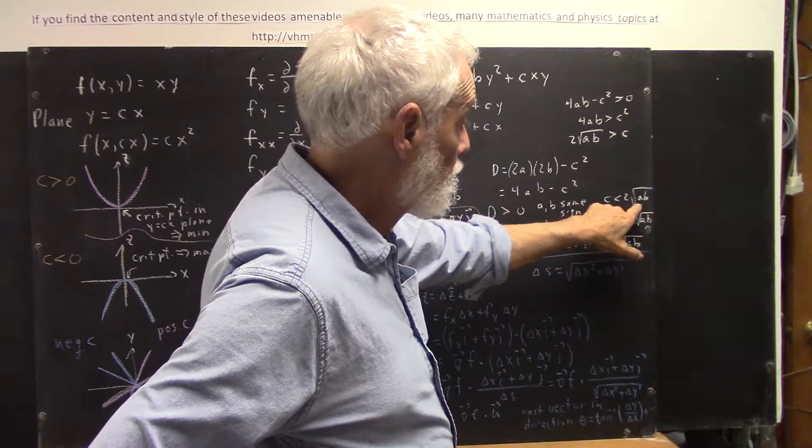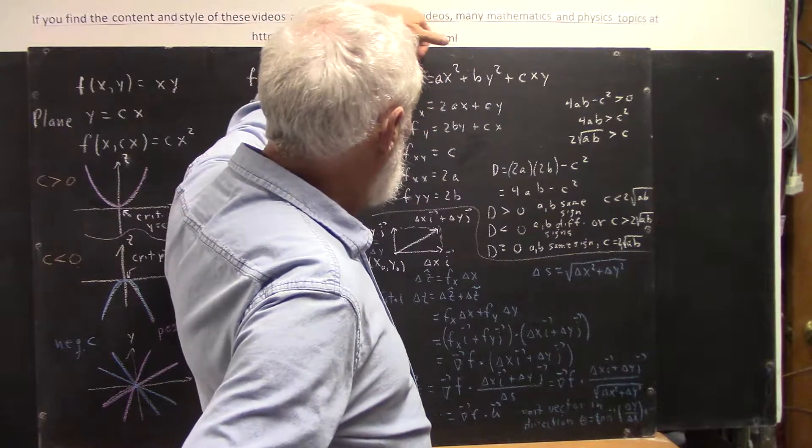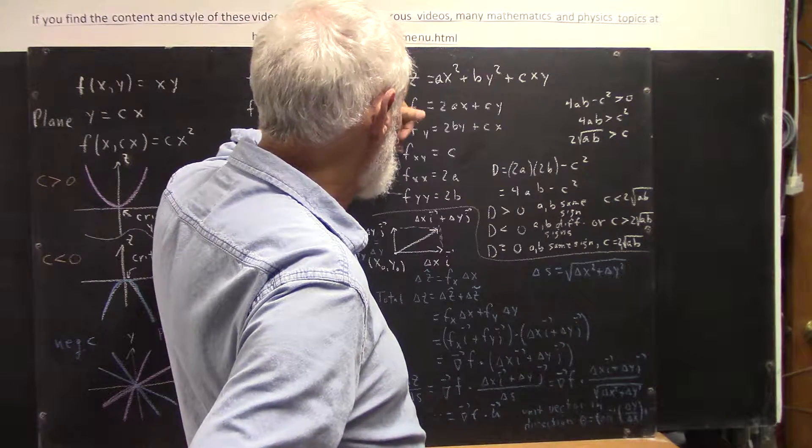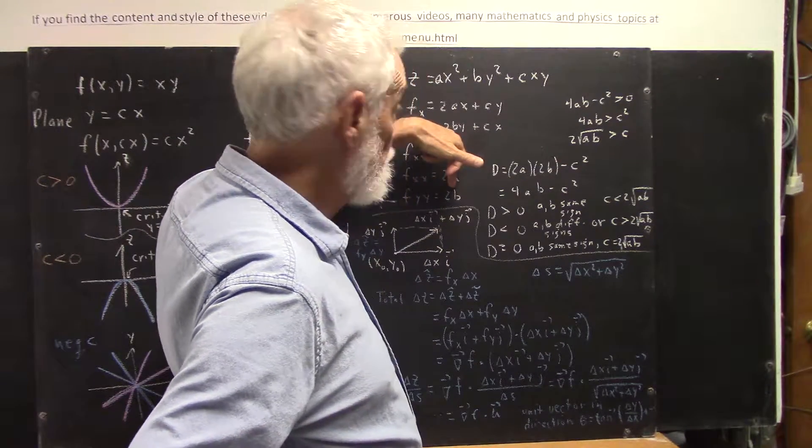Because if c is too big, it'll be bigger than 2 square root of ab. So as long as c isn't too big, and a and b have the same sign, your second partial with respect to x is going to have the same sign as your second partial with respect to y.